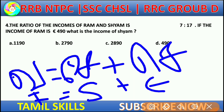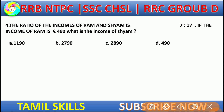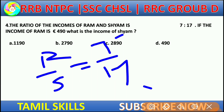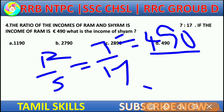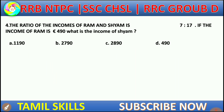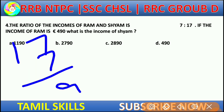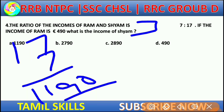Using the income formula and ratio, if the income of Ram is 490, we apply the ratio to find the income of Sham. The ratio 7 to 7 with Ram's income of 490 gives us Sham's income as the answer.